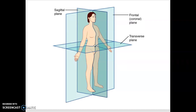The body can be cut into different planes. The sagittal plane separates the body into left and right halves. The frontal plane separates the body into front and back. And the transverse plane separates the body from top and bottom.